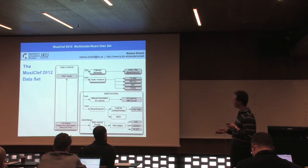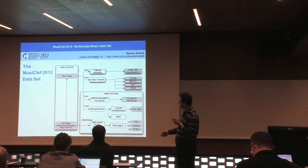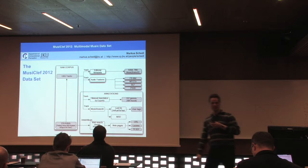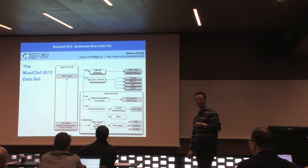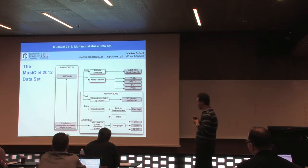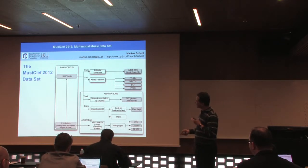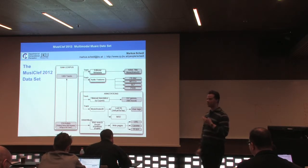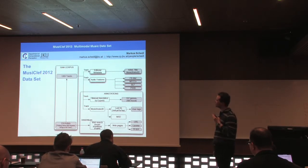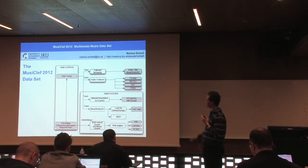For the actual Musically 2012 dataset, we started using the Rolling Stone 500 Greatest Songs of All Time, which are quite popular, helping us avoid the long-tail effect. This gave us 240 artists, from which we extracted a total of 1,355 tracks.